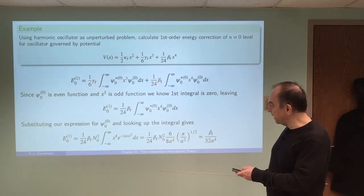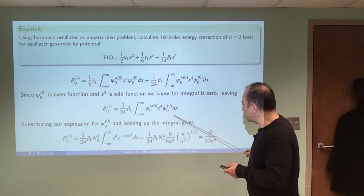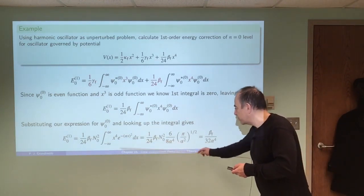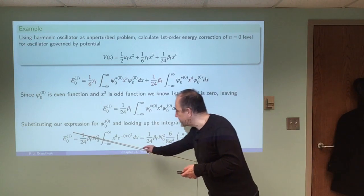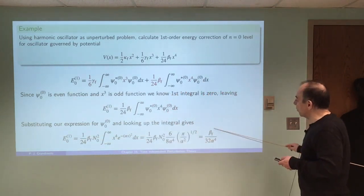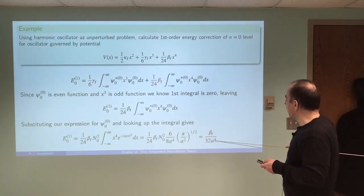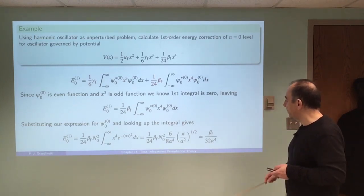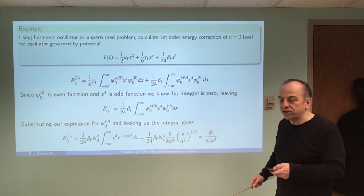Plugging in the zeroth-order wave function and working out the math, you get the result for the integral and then the final energy correction. The first-order energy correction to the zeroth-order energy is given by the coefficient B-F divided by 32, times alpha to the fourth — where alpha is the variable we defined when solving the harmonic oscillator problem. That's one simple example of getting the first-order energy correction.